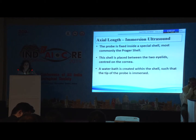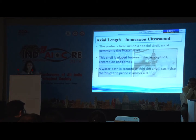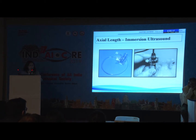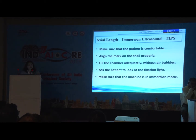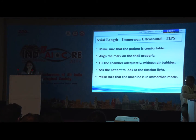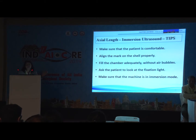The improvement on this is immersion ultrasound, which uses a specialized shell known as the Prager's shell. A water bath is created within the shell, and the tip of the probe is immersed in it. Make sure the patient is comfortable. Align the mark on the shell properly with your probe so that you are taking axial measurements. Fill the chamber adequately — don't overfill it, and there should be no air bubbles. Ask the patient to look into the fixation light of the probe. Also, please change the mode on your ultrasonic machine — a very common mistake is measuring in contact mode and then switching to immersion mode without changing the setting, which will give haywire readings.